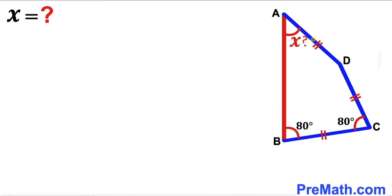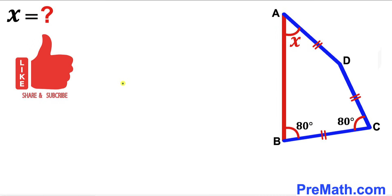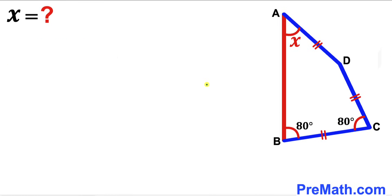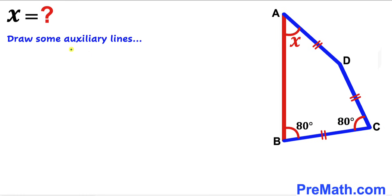In other words, we are going to find the value of angle BAD. Please don't forget to give a thumbs up and subscribe, and keep in mind that this figure may not be 100% true to scale. Let's get started. The only info given to us is that angle ABC is 80 degrees and angle BCD is 80 degrees as well, so we are going to draw some auxiliary lines to make our job simpler.